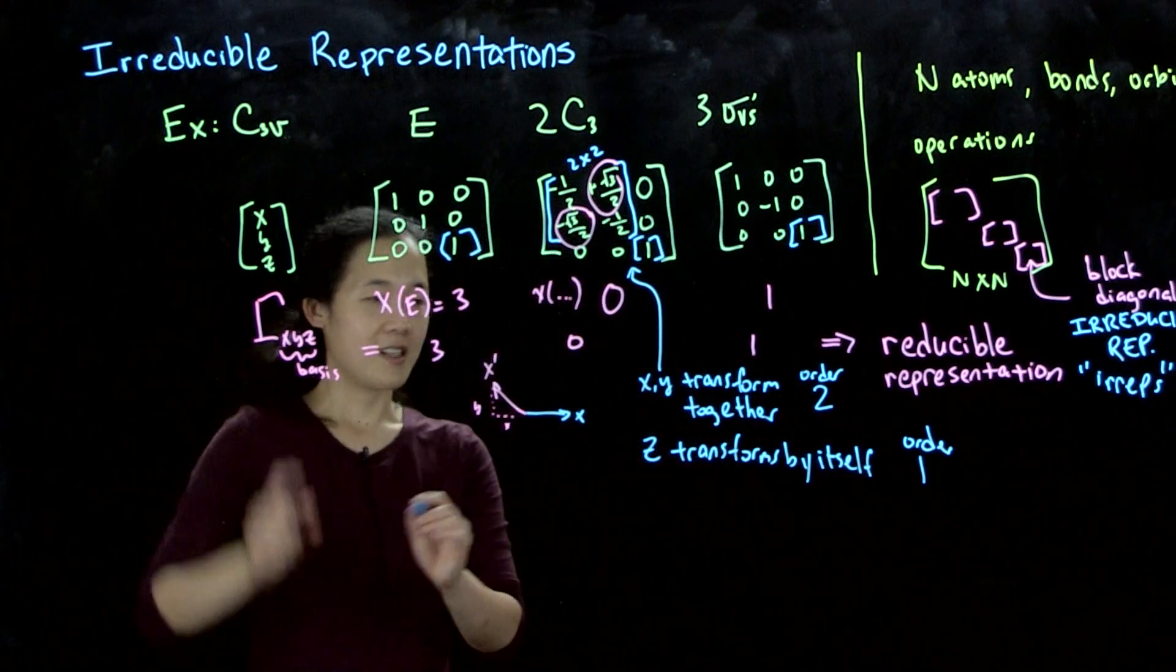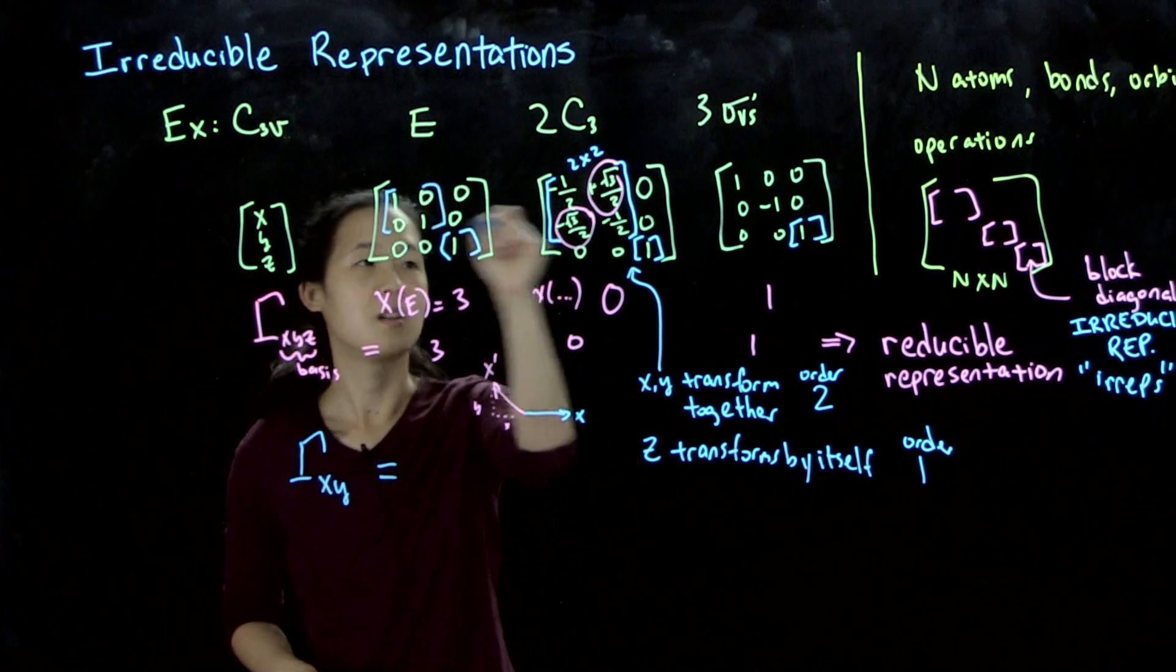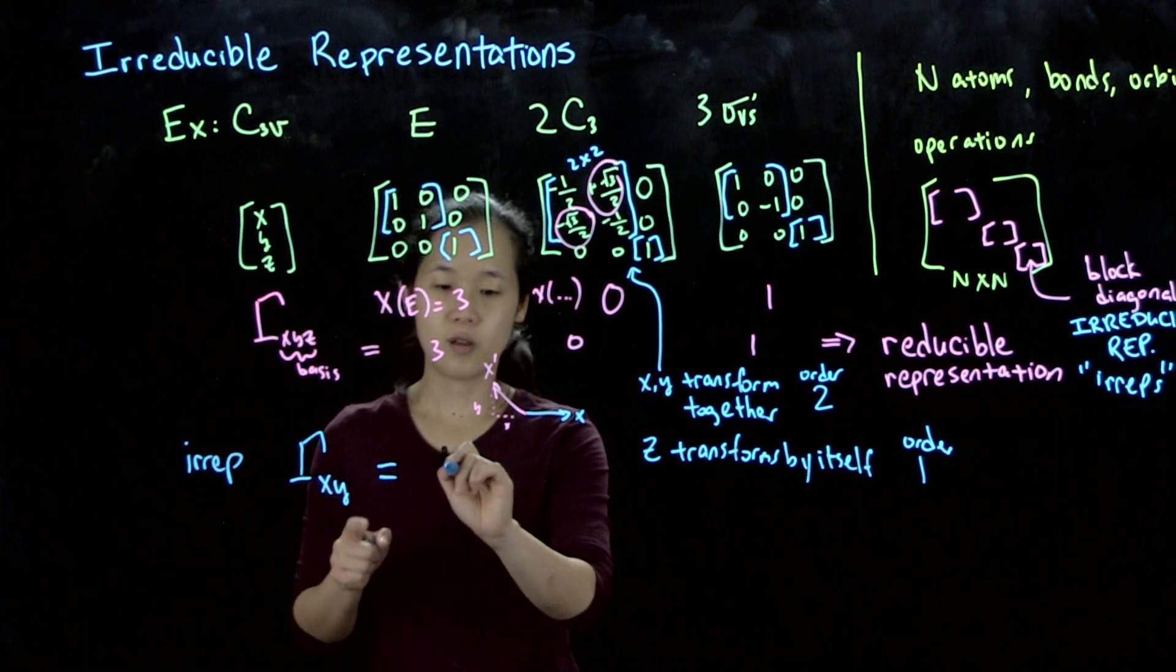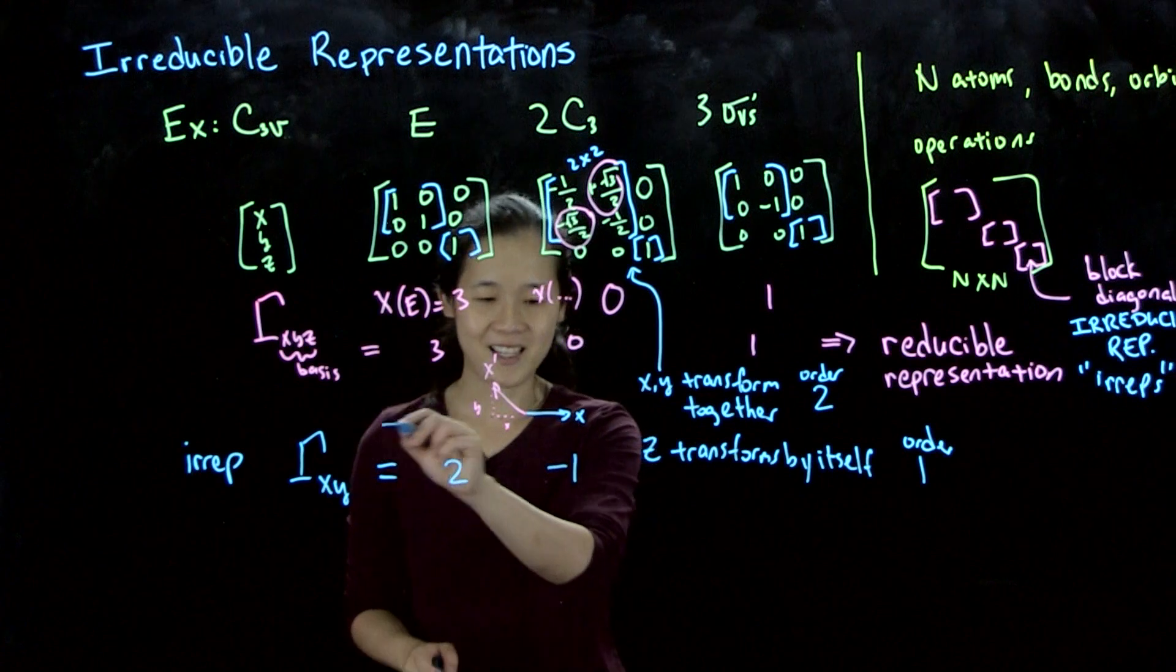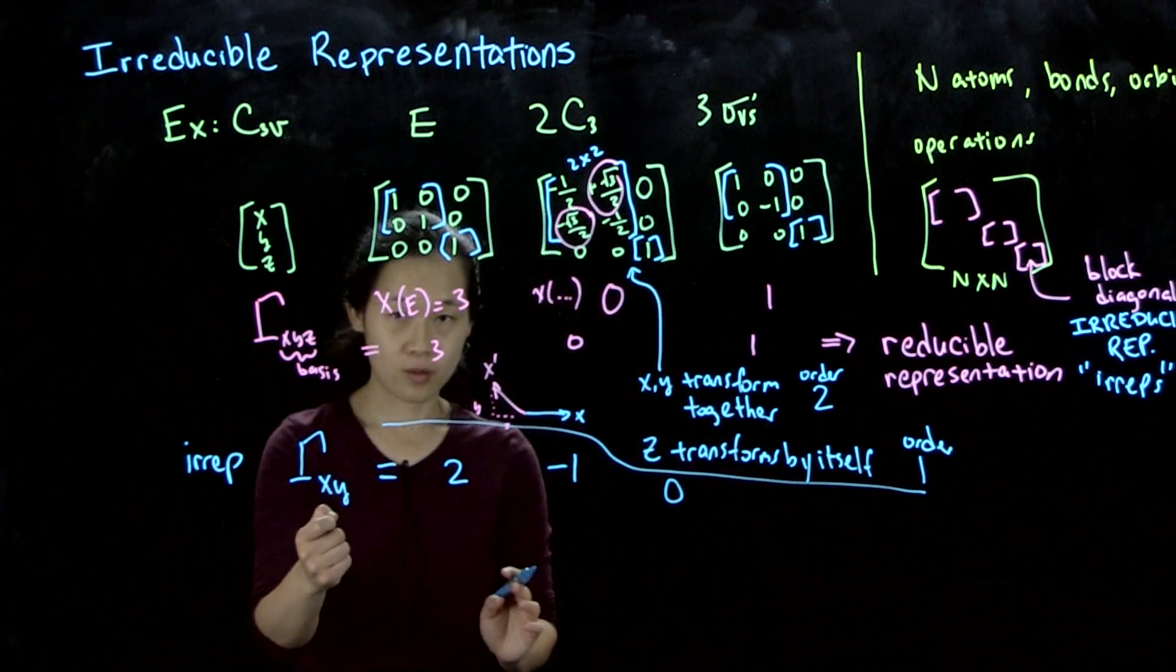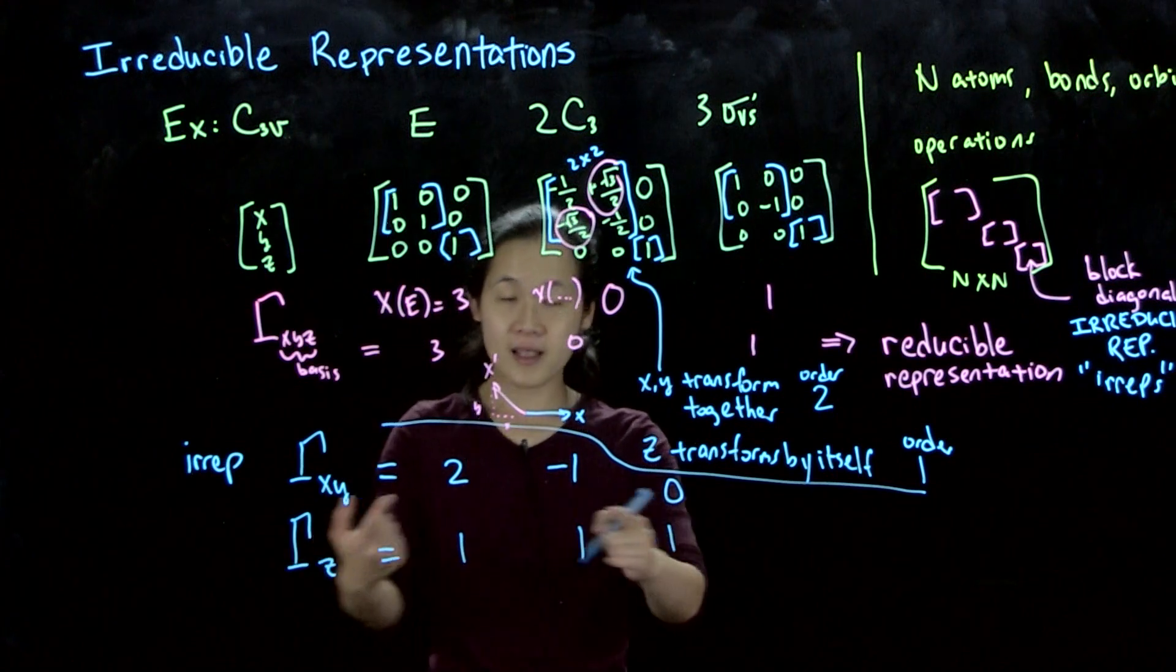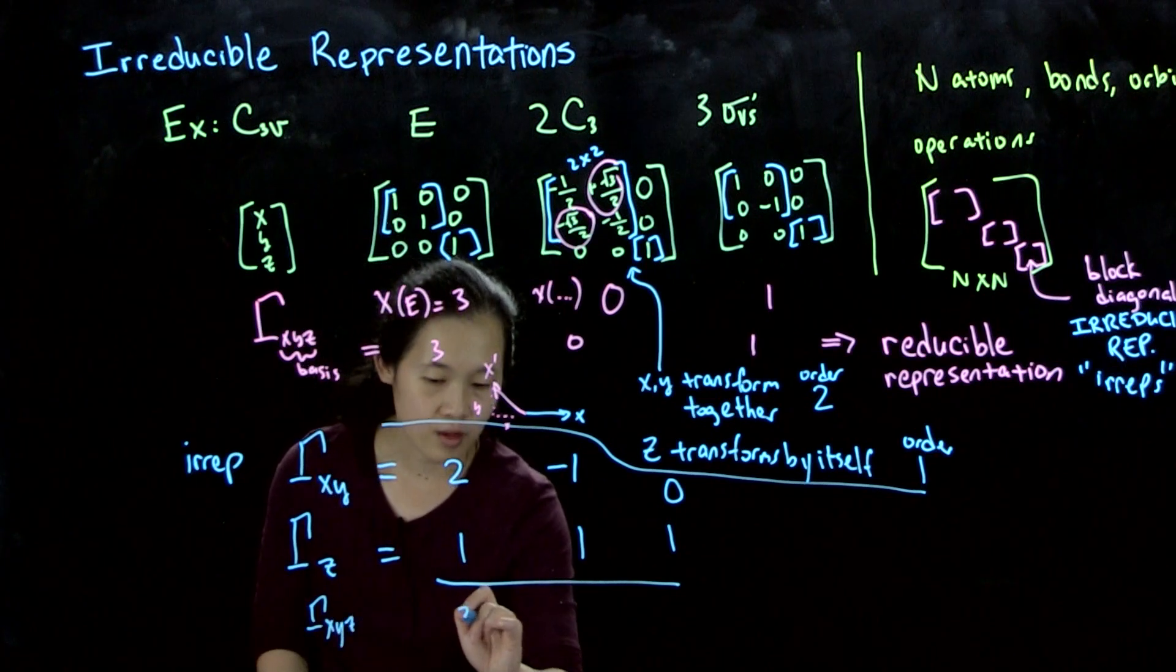We can break this down into gamma x, y—the traces of our 2 by 2s. So the irrep of gamma x, y is going to be equal to 2 for E, minus 1 for C3, and 0 for sigma v. And gamma z that transformed by itself is 1, 1, 1. You can see that these two sum up together to form our gamma x, y, z, which was 3, 0, 1. We've broken down our x, y, z basis into two irreducible representations.